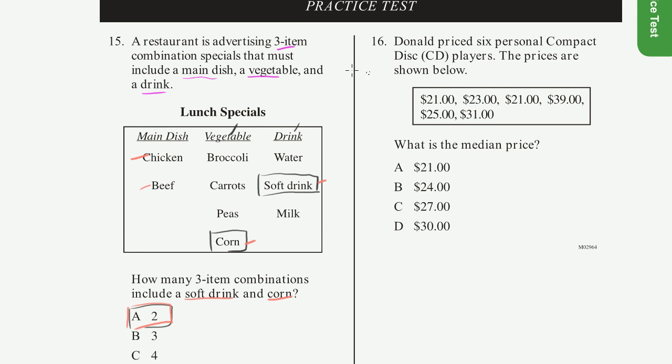Problem 16. Donald priced six personal compact disc players. And they wrote the CD right there. The prices are shown below. OK, so these are six CD players. What is the median price?